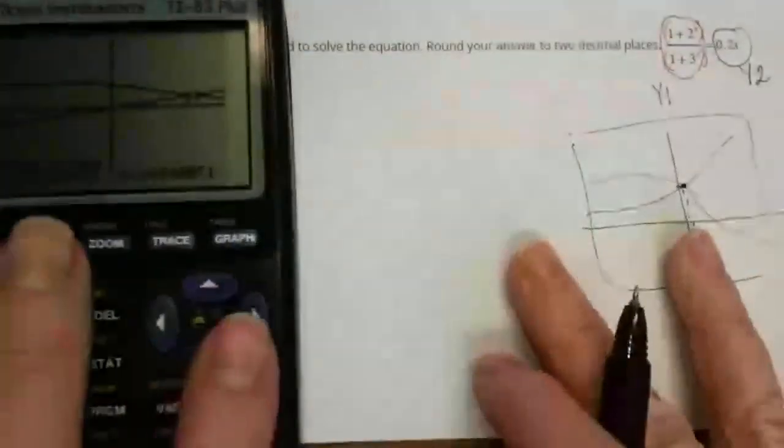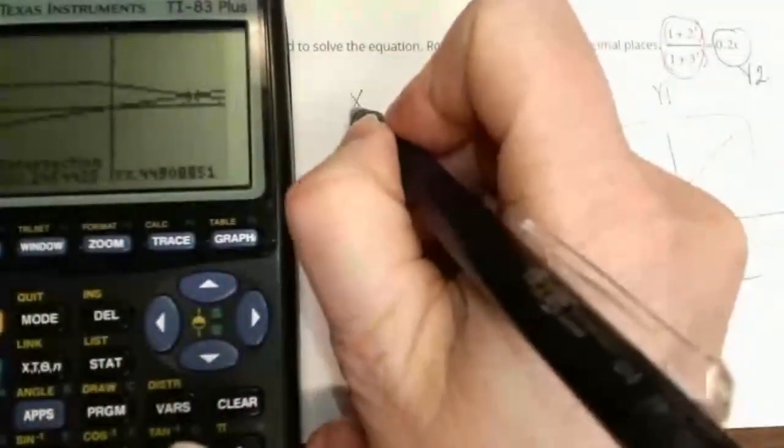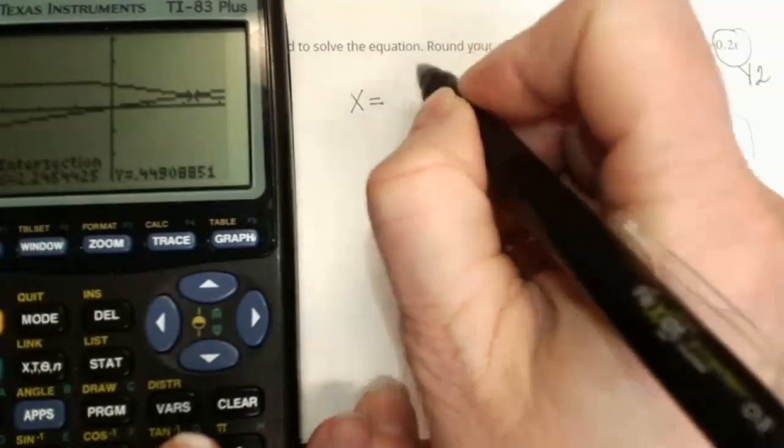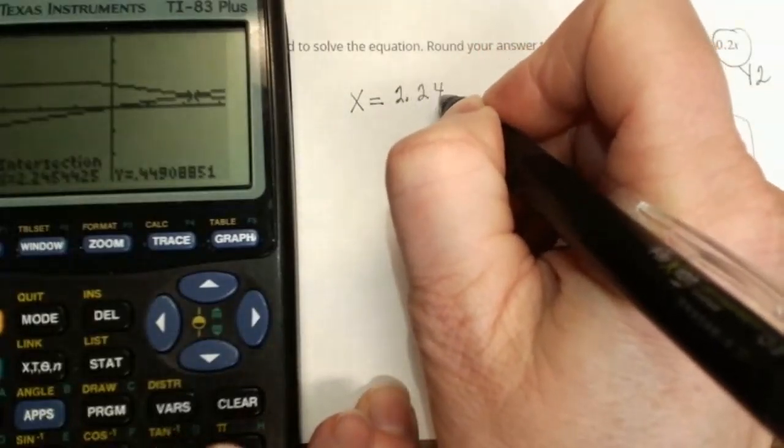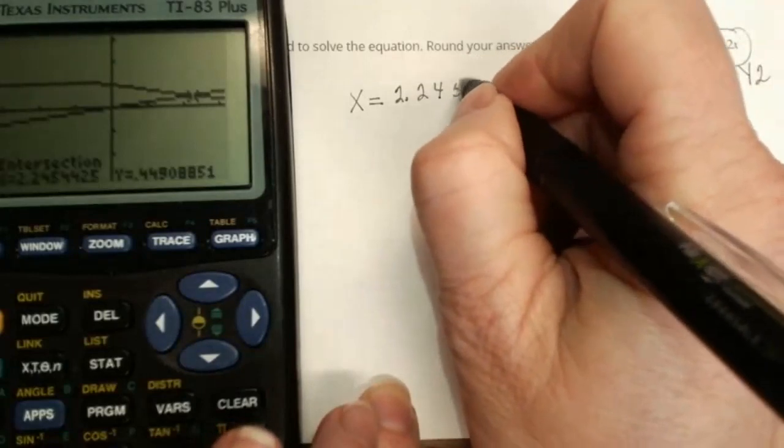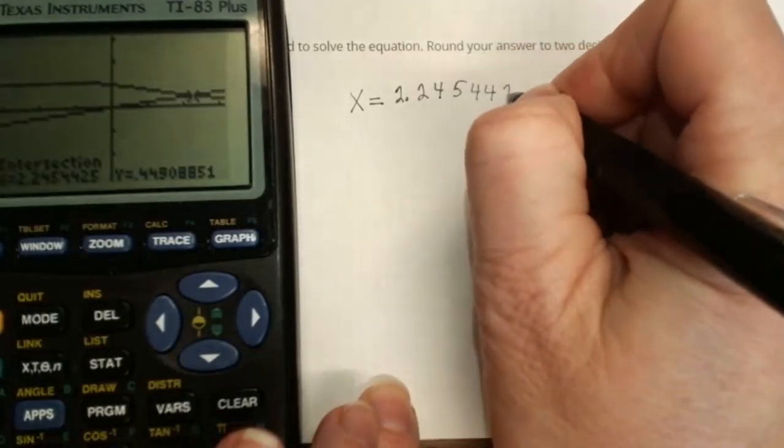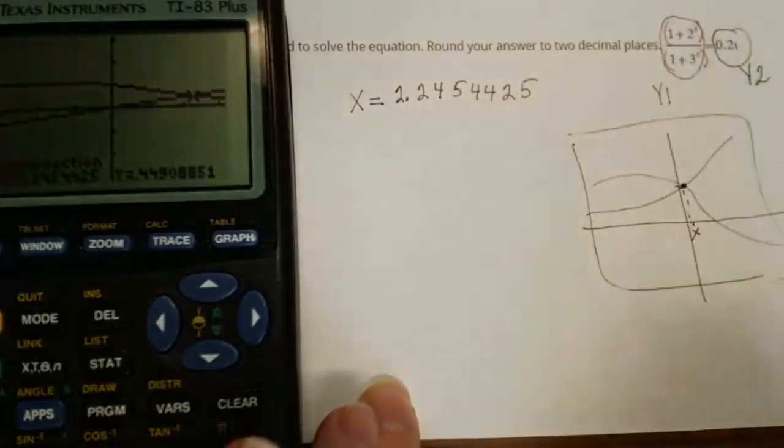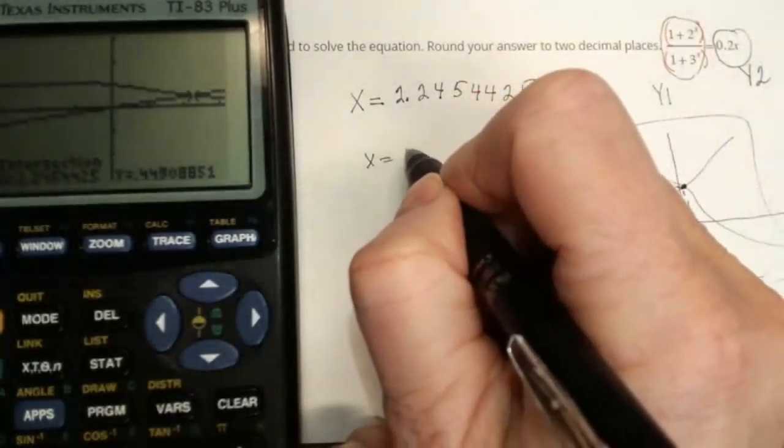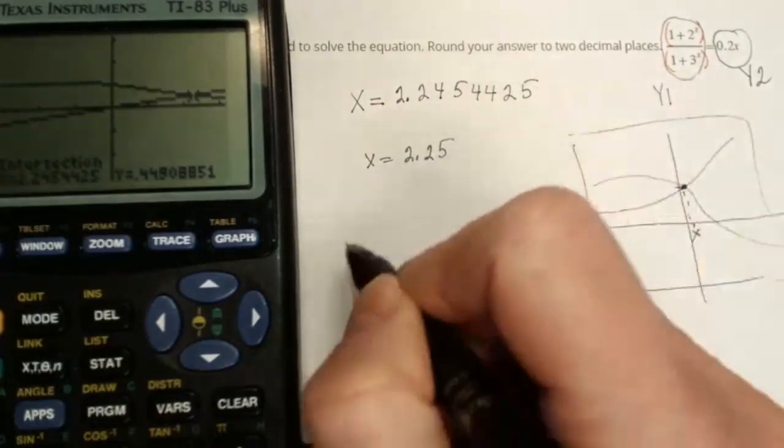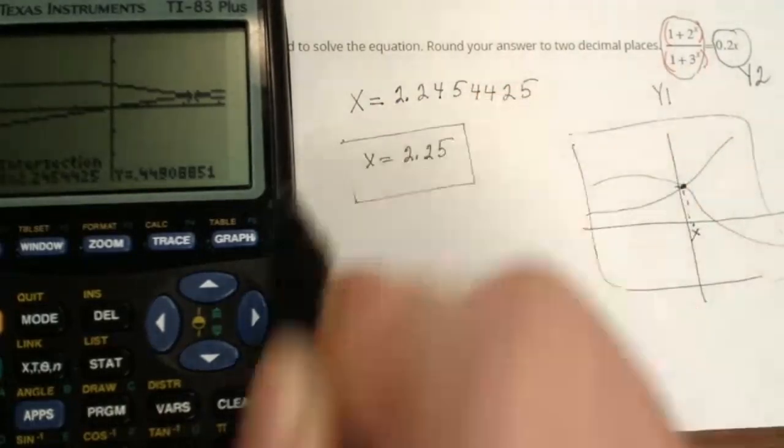I will write it down right here. So our final answer is x equal to 2.2454425. Round your answer to two decimal places, so it will be 2.25 hundredths. That's all.